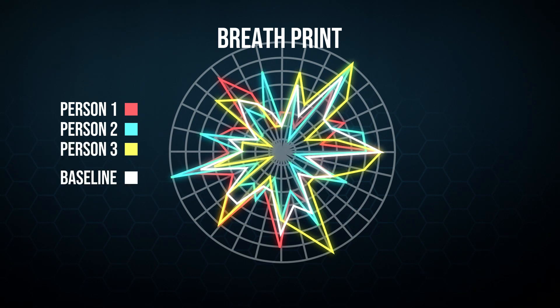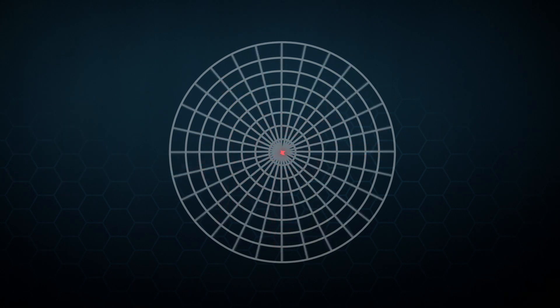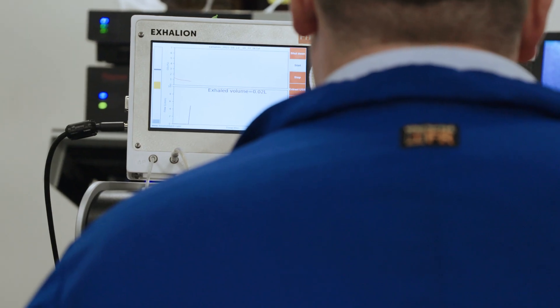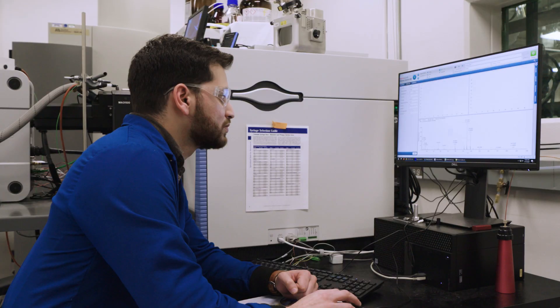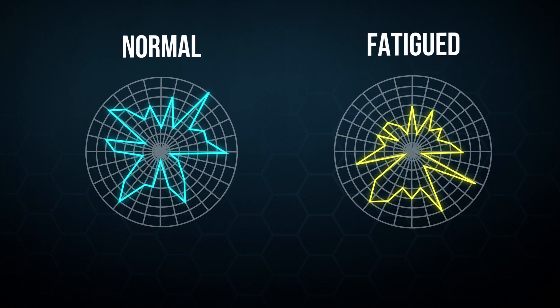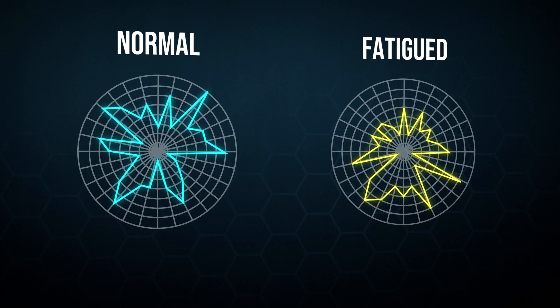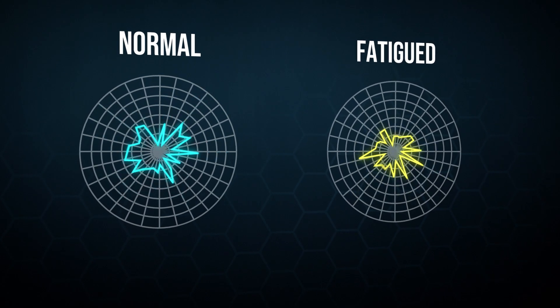What we want to do is take that individual breath print and stitch different people's breath prints together so that we can create a very good average baseline for people in general. Once we have that baseline, we can look at different states such as fatigue — comparing my breath print in normal conditions to my breath print when I'm extremely fatigued, and see how those two compare to each other.